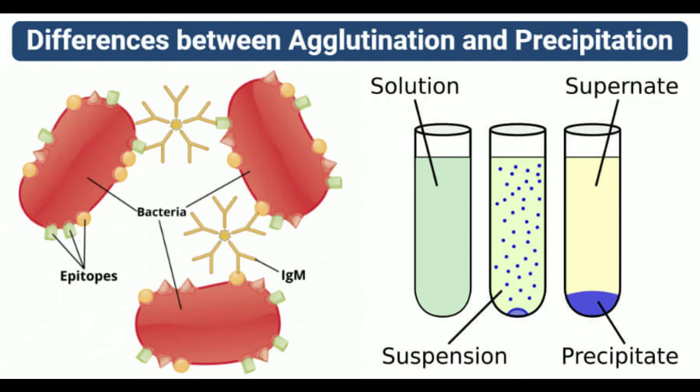A modified and more sensitive technique associated with agglutination is agglutination PCR. In this technique, the antibodies bind and agglutinate with antigen-DNA conjugates, which enables the DNA strands to ligate with the antibodies. The agglutination form is then used to quantify the DNA strands by QPCR.